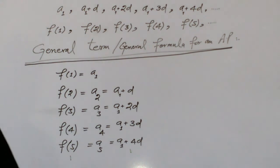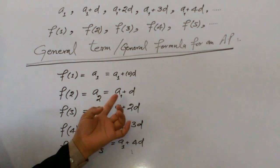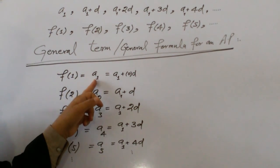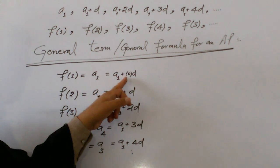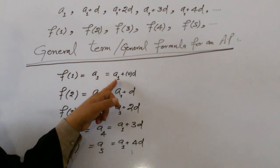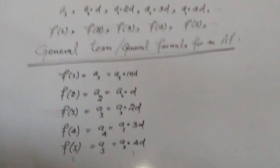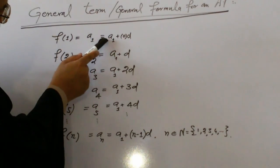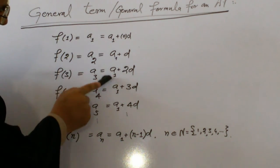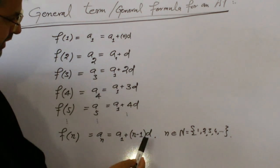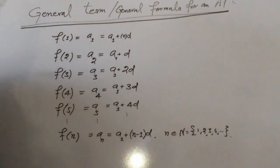Let us generalize these terms. In each term there is A1 and D. In the first term there is only A1, which can also be written as A1 plus 0 times D. Since 0 times D equals 0, we get A1 plus 0 equals A1. Therefore it can be converted into the generalized form. The coefficient of A1 in each term is 1.